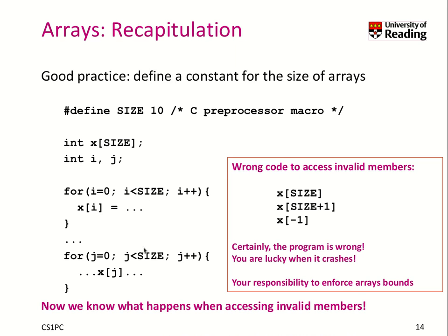Now we can use in any kind of loop that we iterate through it the variable, well not the variable, this preprocessor macro SIZE. That is not a variable by the way, it will be replaced at compile time with the value. So in fact, at compile time that means x[10], i smaller than 10, this is going to be replaced.